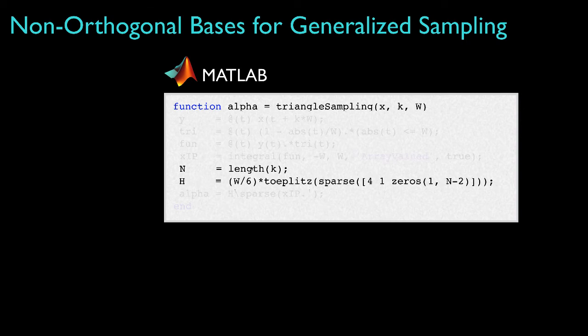After I've created the inner products for the basis and the signal, I need to create the matrix of inner products for all pairs of basis functions. And because this is a sparse Toeplitz matrix, I can set this matrix up using the MATLAB commands sparse and Toeplitz. And doing so, especially using the sparse command, will greatly reduce the computations required to solve the system of equations.